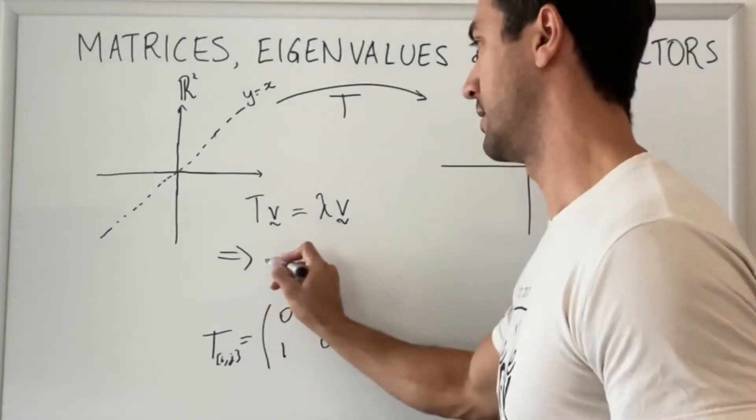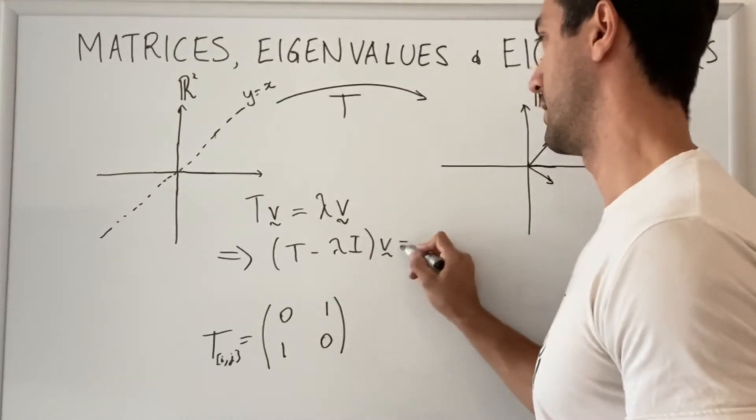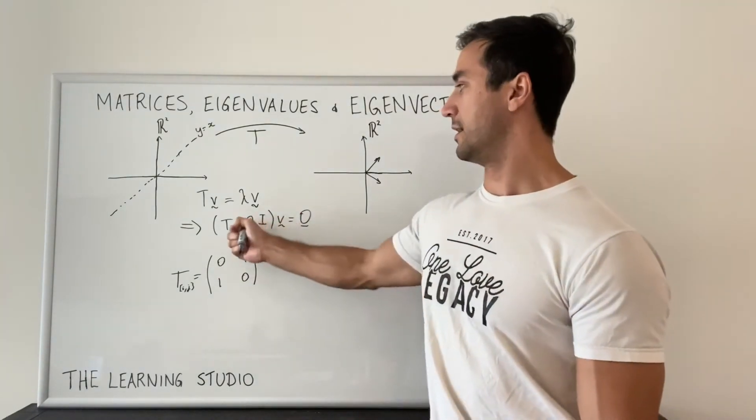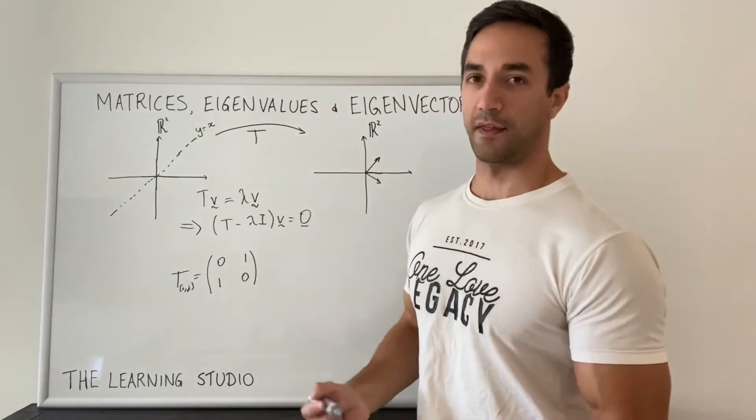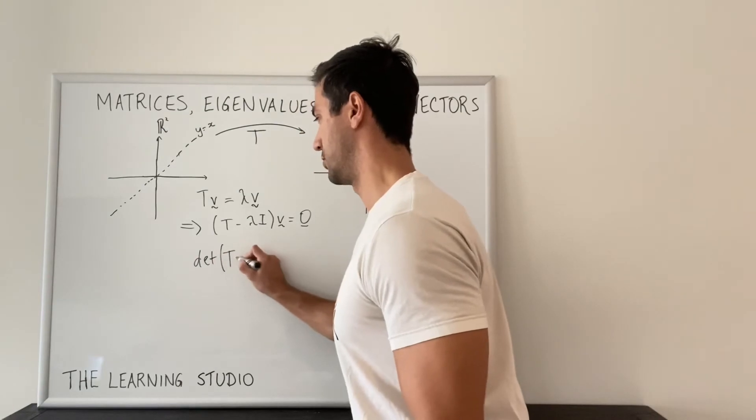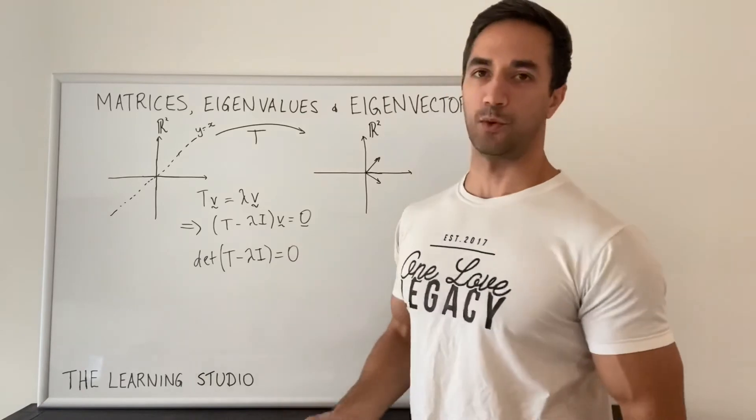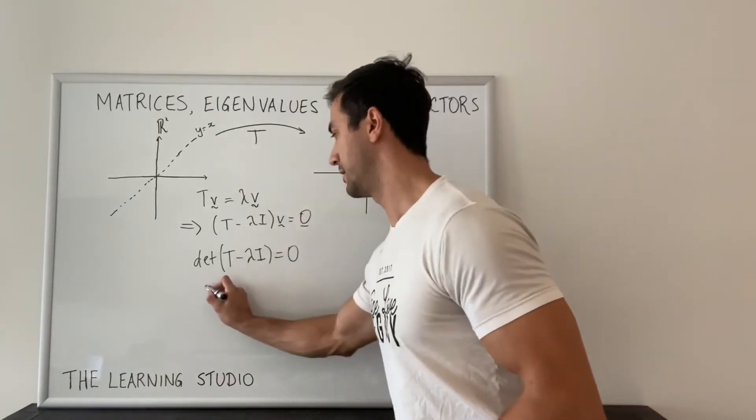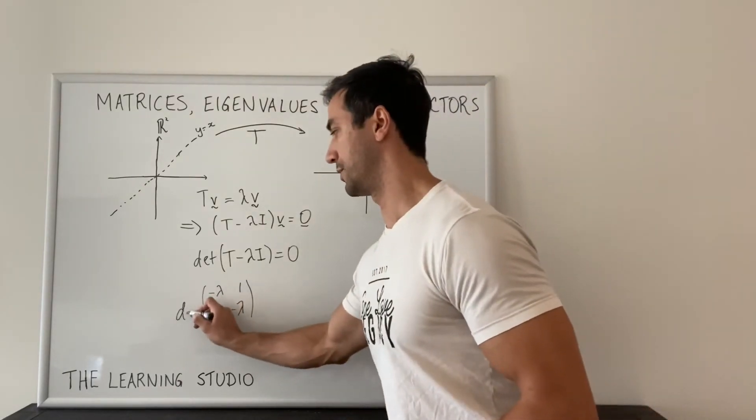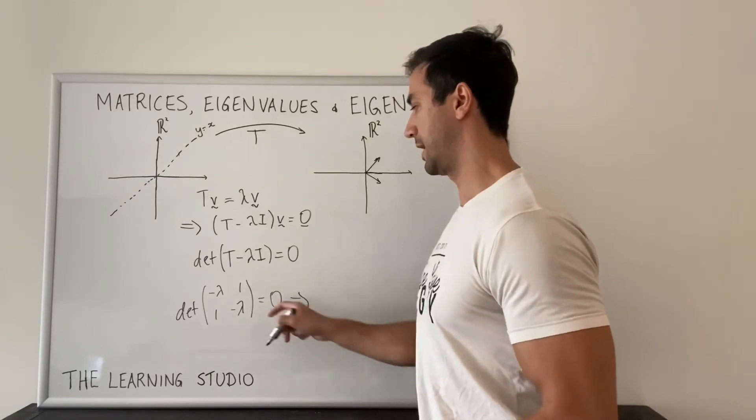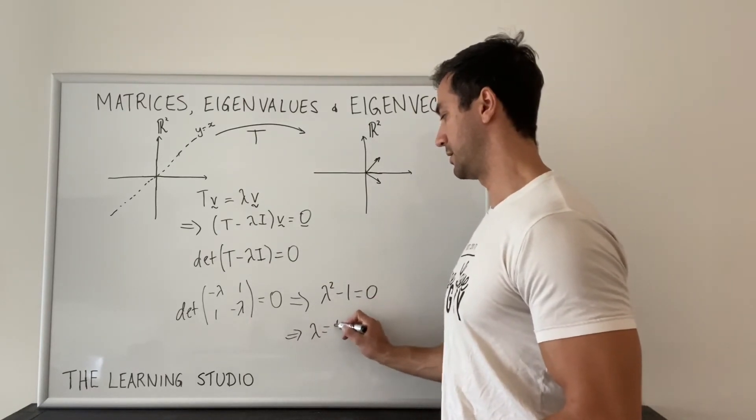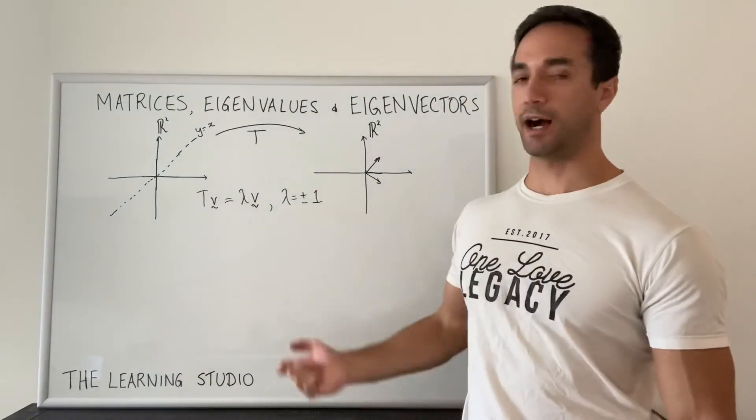And so then obviously you can rearrange it. We want T minus lambda I times our vector to give us the zero vector. And for this to work for non-zero V, it means that this matrix is not invertible, has determinant zero. And that's where we get the equation to find our eigenvalues. So if we want to find eigenvalues, we normally solve this equation. We want the determinant to be zero. So in the example we have here, this matrix we get is just going to put a minus lambda in the diagonal. And so we want the determinant of that to be zero. And the determinant of this is lambda squared minus one. Which tells us that our eigenvalues are plus or minus one.